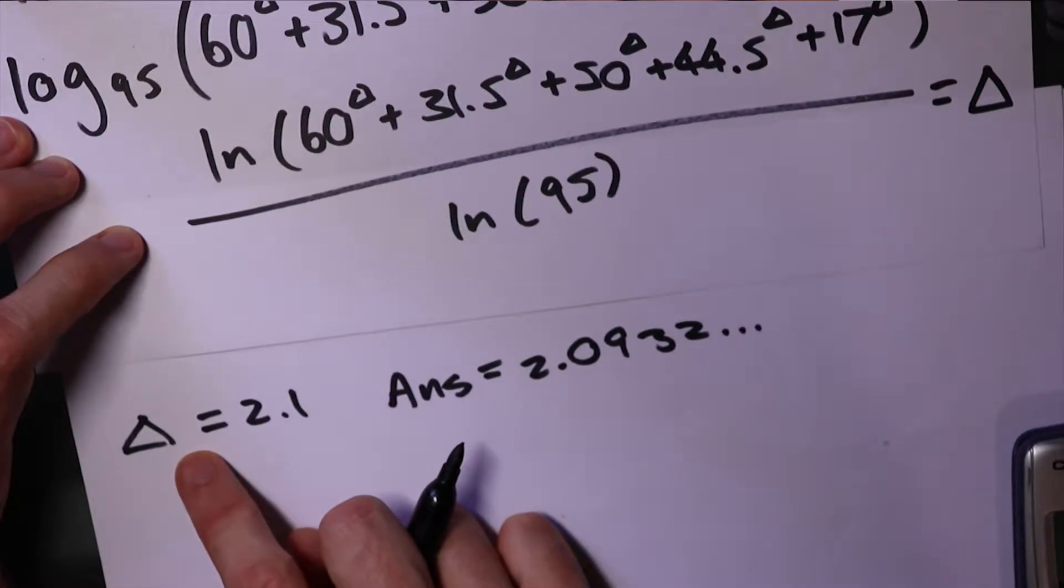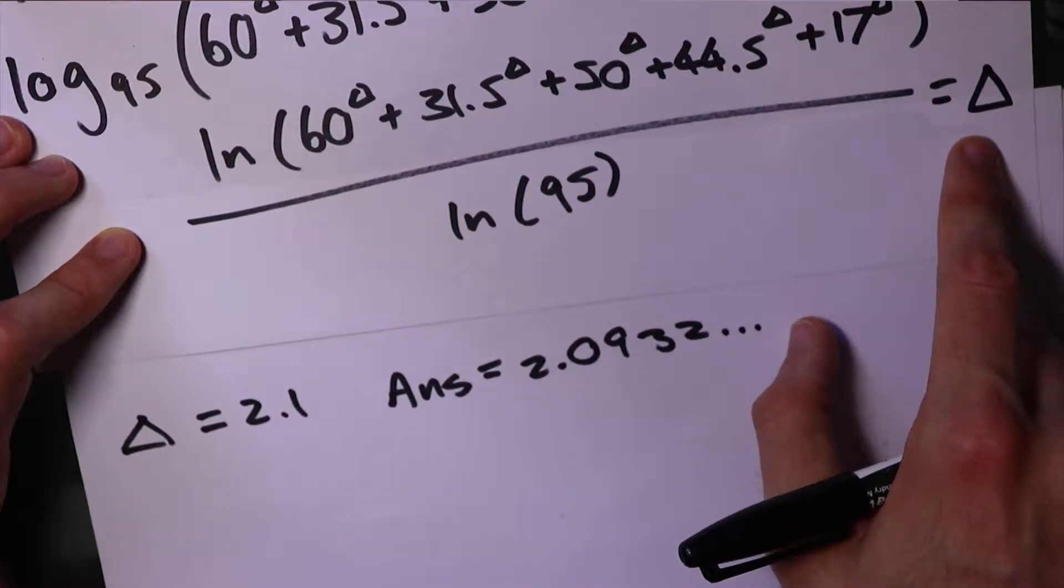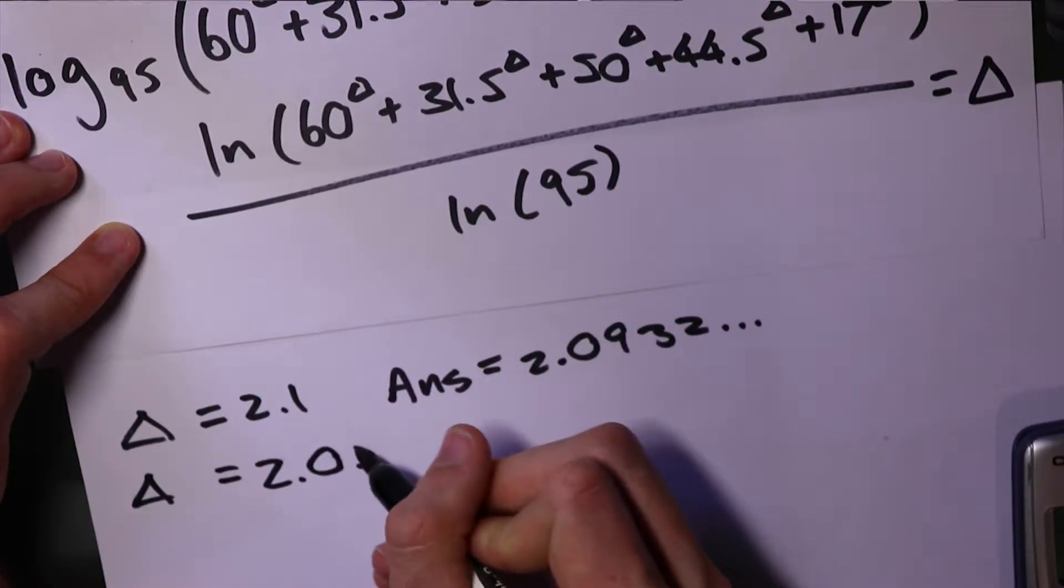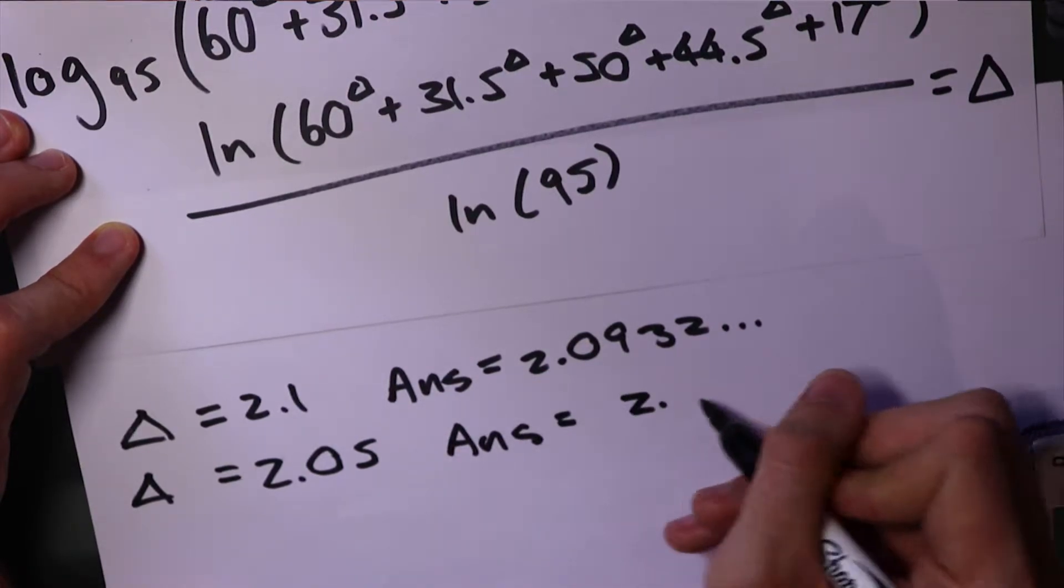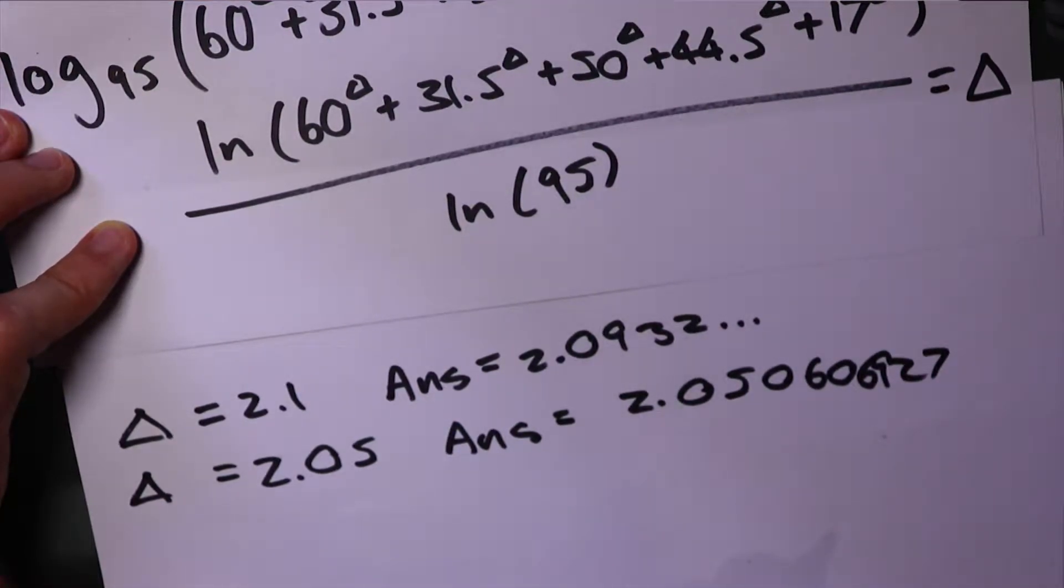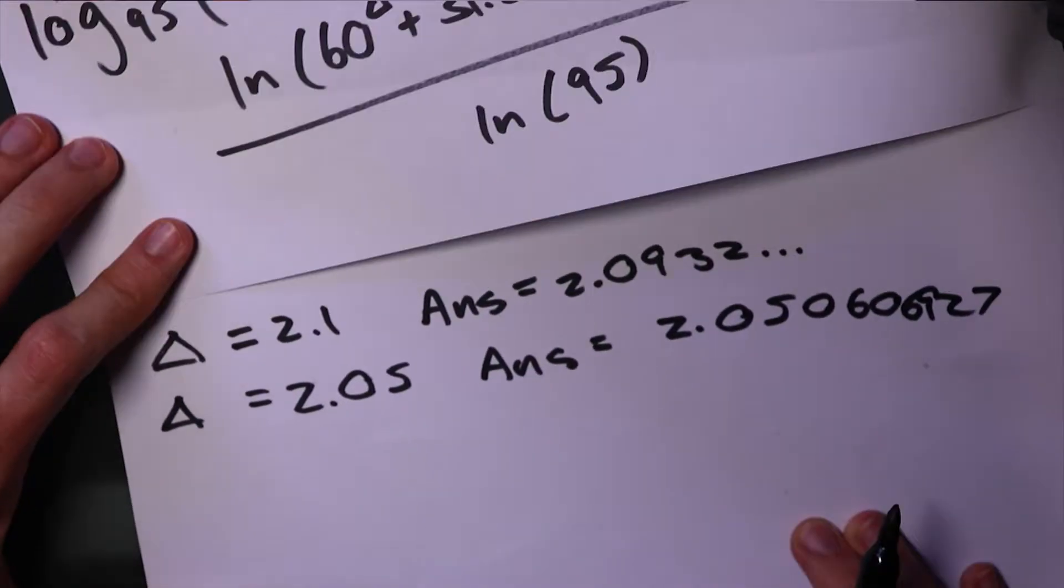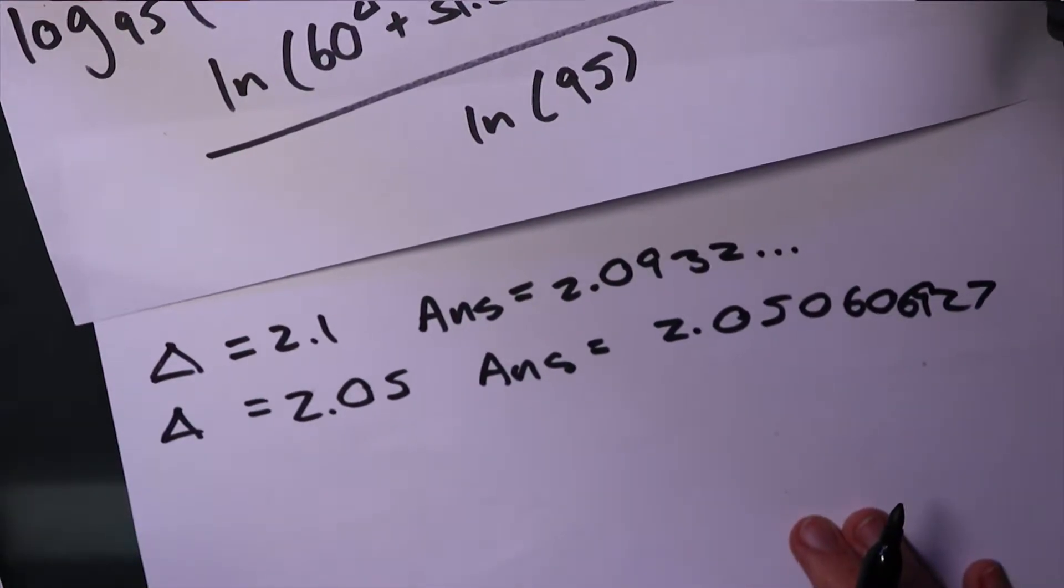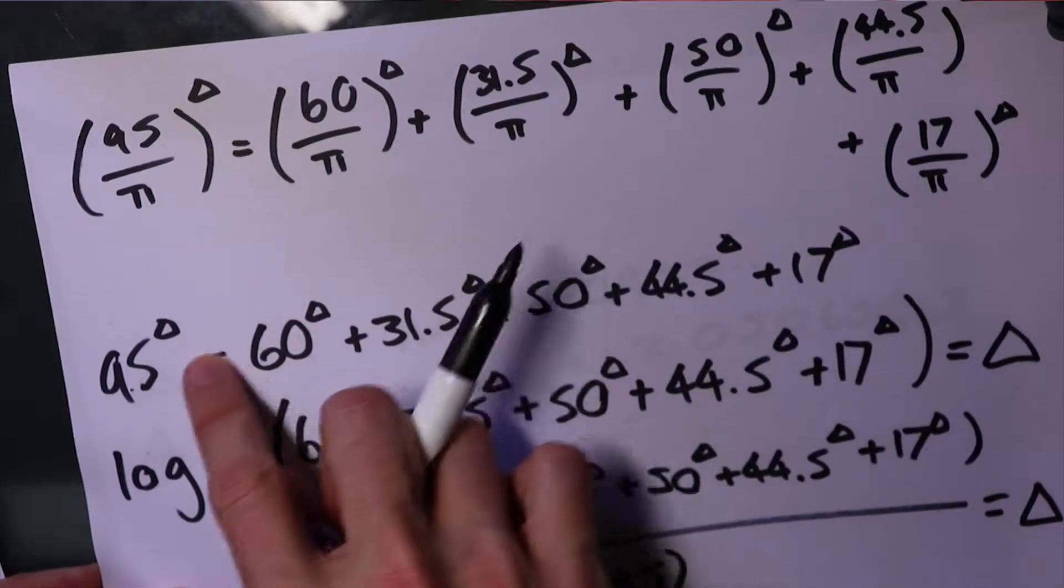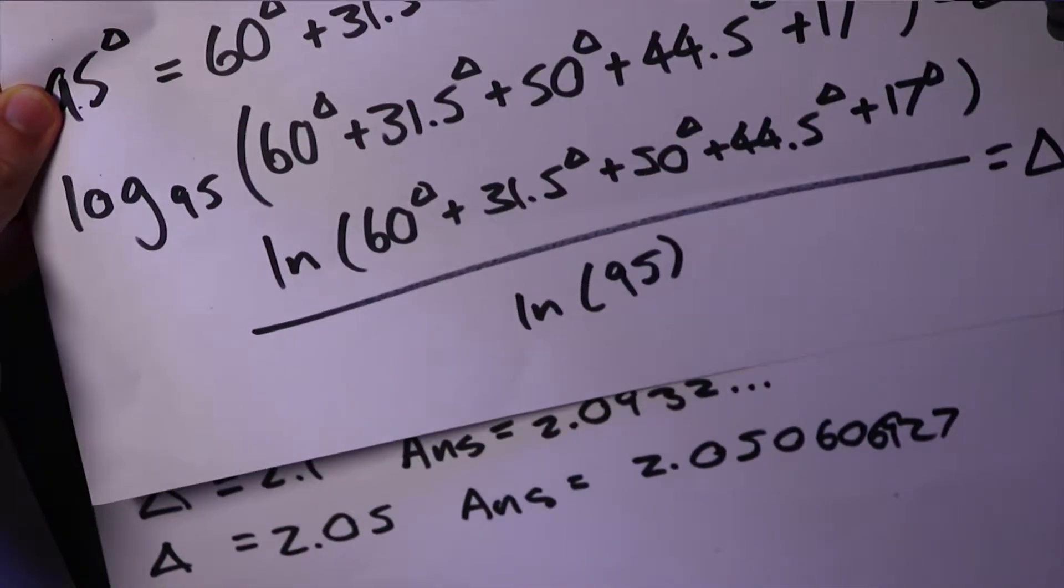So, when I put in the correct answer for my Leonardo exponent, I'll get the same number out here. Now, I just played around a little bit, but when I put in 2.05, my answer was 2.050606927, which is pretty close. So, that's a good enough approximation for me, and we can also check it. So, if we go all the way back to this step here, let's try subbing in 2.05.